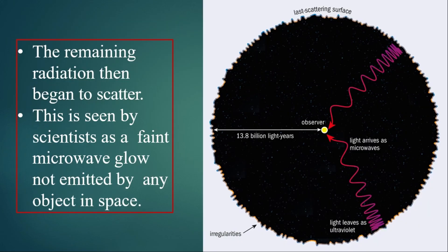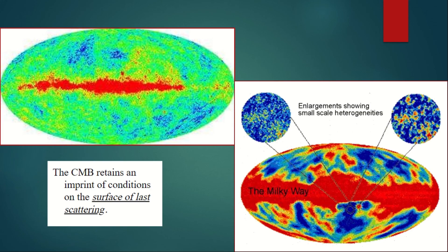The remaining radiation began to scatter and is seen by scientists as a faint microwave glow not emitted by any object in space — it is scattered throughout our universe. Up until now, the cosmic microwave background radiation is still observed. The cosmic microwave background retains an imprint of conditions on the surface of last scattering, serving as evidence that proves the Big Bang Theory.